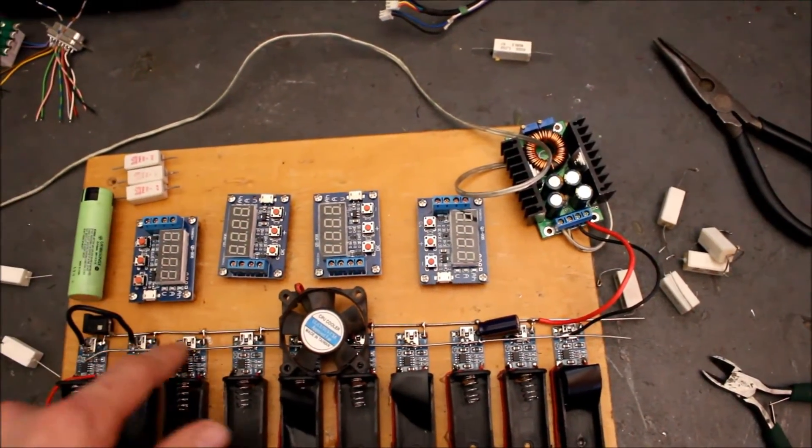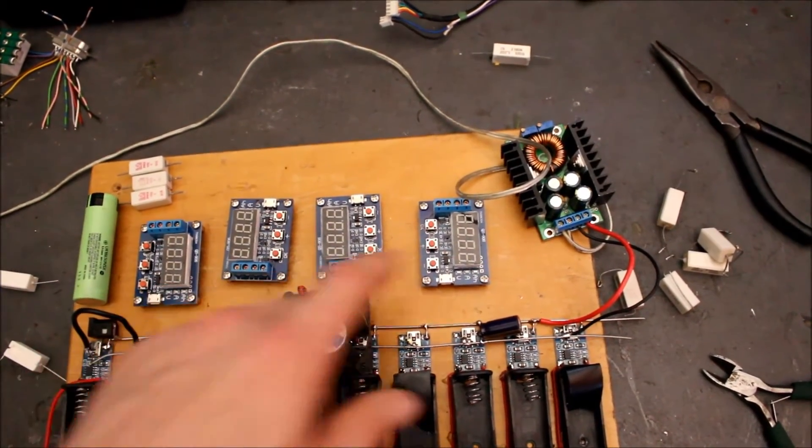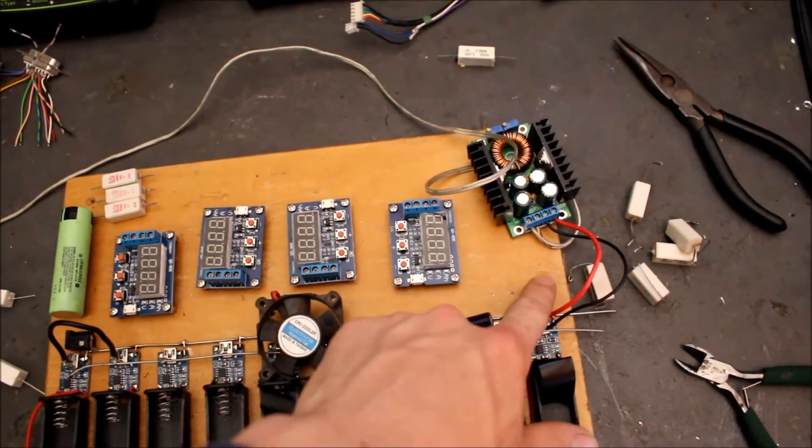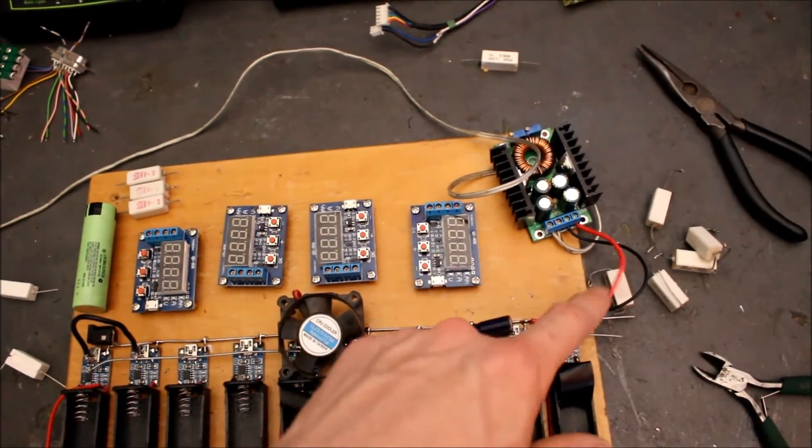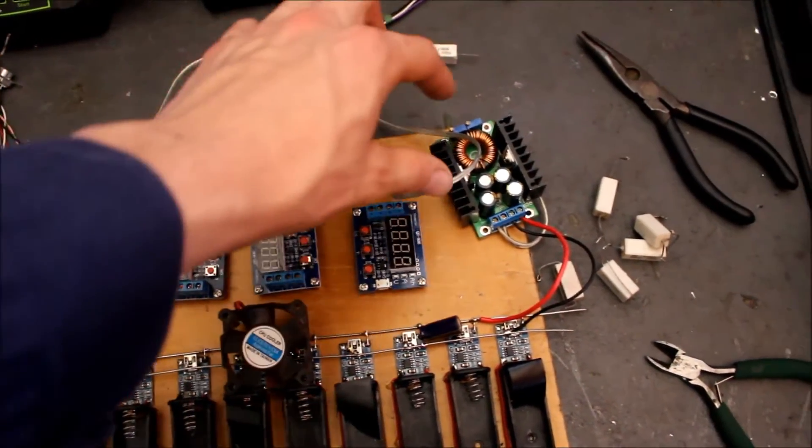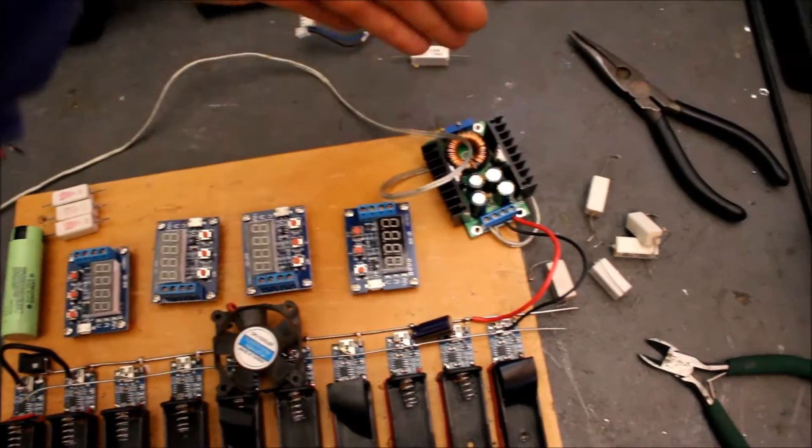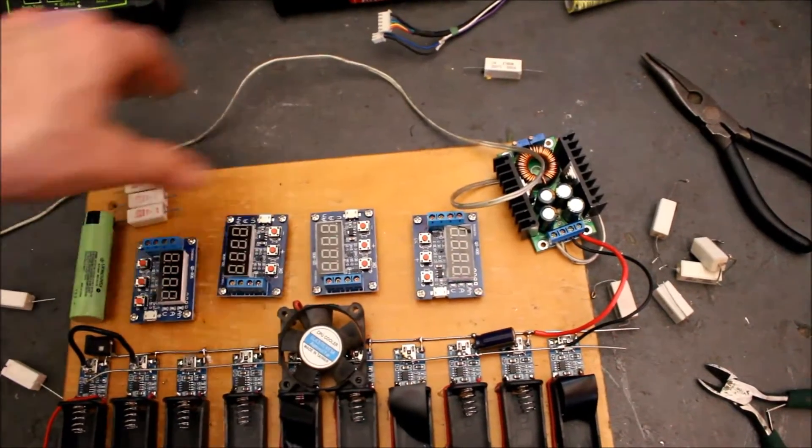So I can run that directly onto this bus bar, and then these will space through up here and then my DC converter can go on the end. And so that'll keep the heat up here.